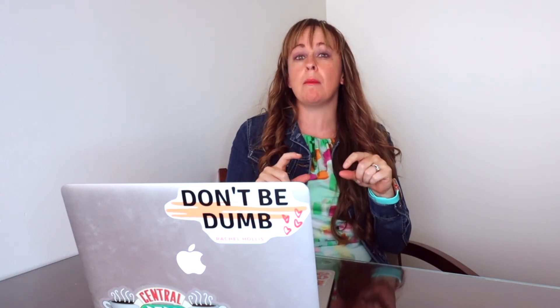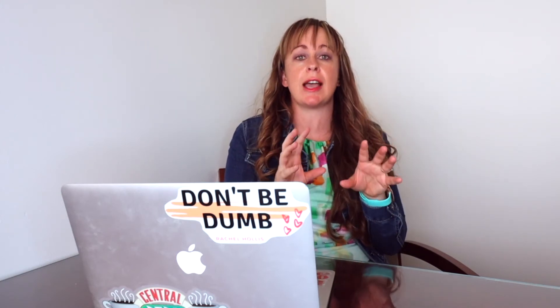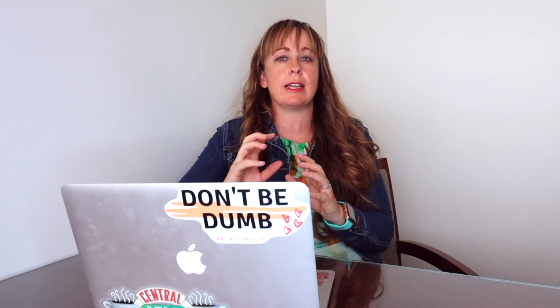Your AGI, your adjusted gross income, is usually the number that your lenders look at when you're buying a house, looking to refinance a mortgage, or trying to borrow any sort of money. When they're trying to look at what your income is as an individual, your AGI is usually the very first place they look to get an idea of what your income picture looks like.